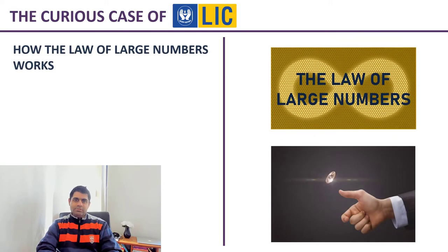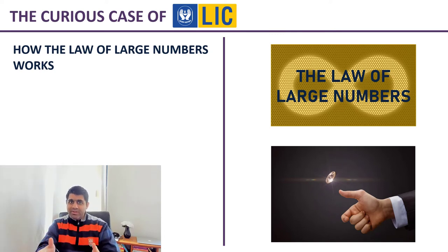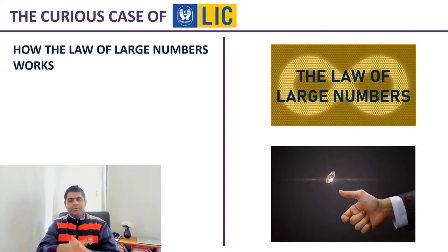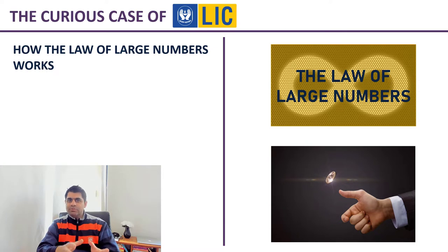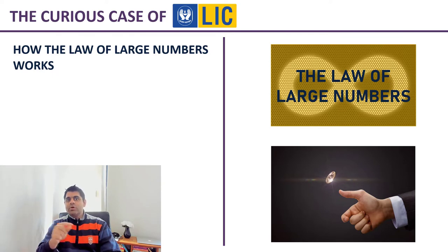So what is the law of large numbers? Rather than giving you a definition, which is kind of boring as well as very technical, let me take an example. Let's say I toss a coin. The chances of getting heads or tails are 50% each, so the probability of the outcome is always 50% — 50% heads, 50% tails.